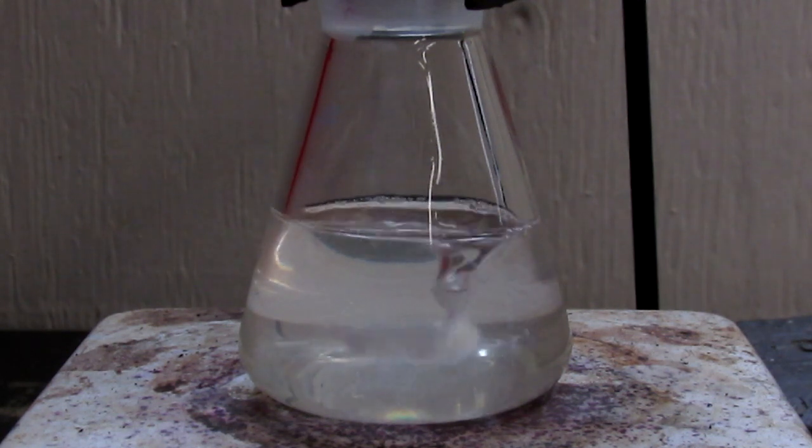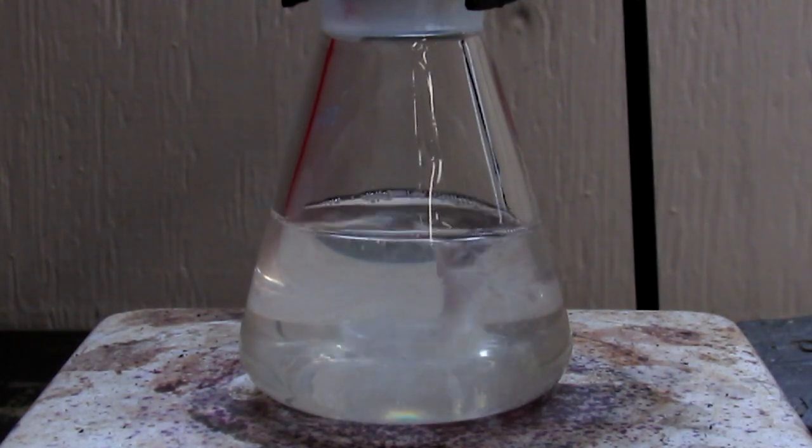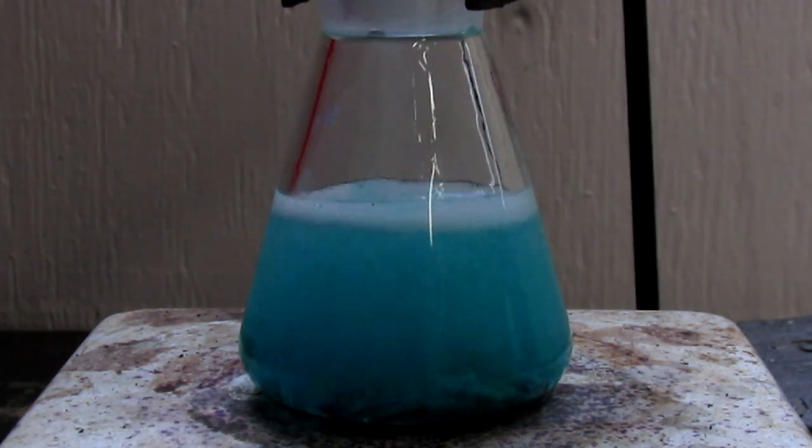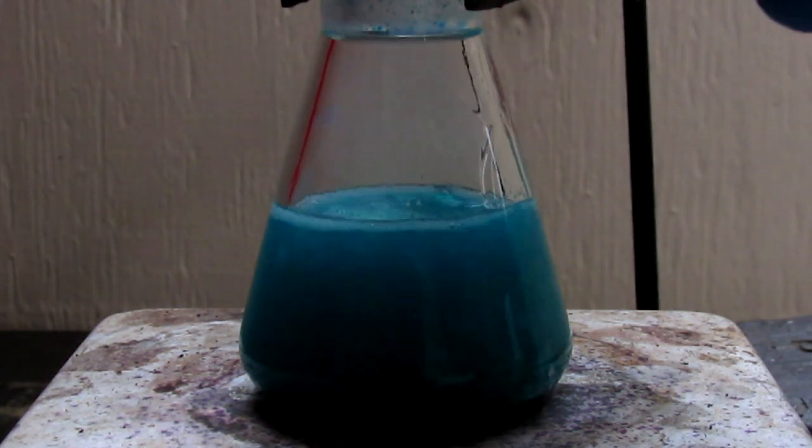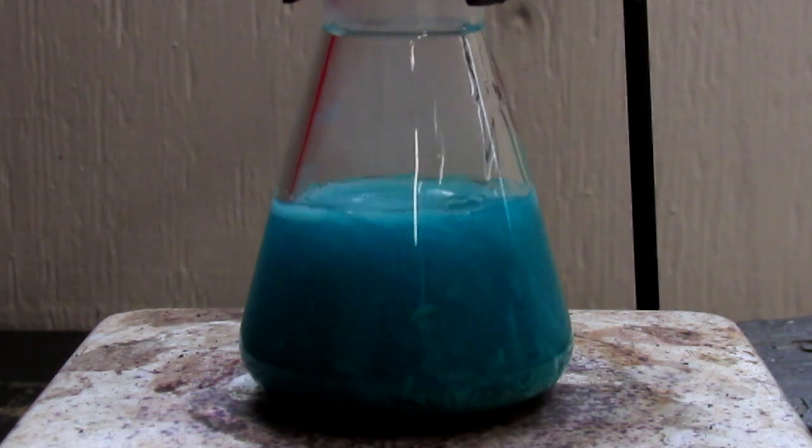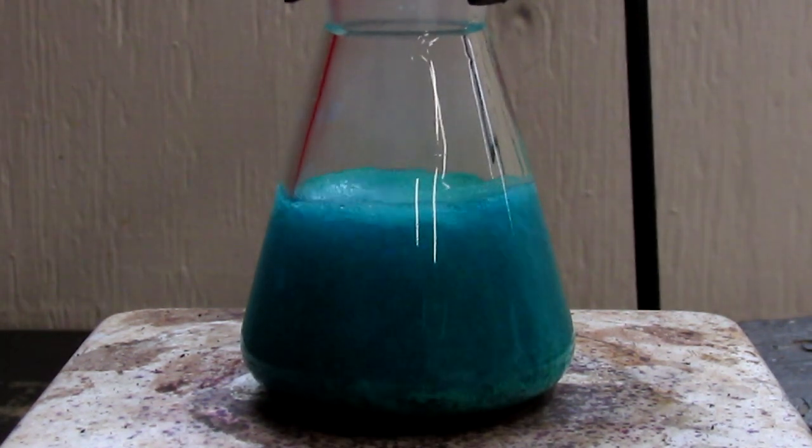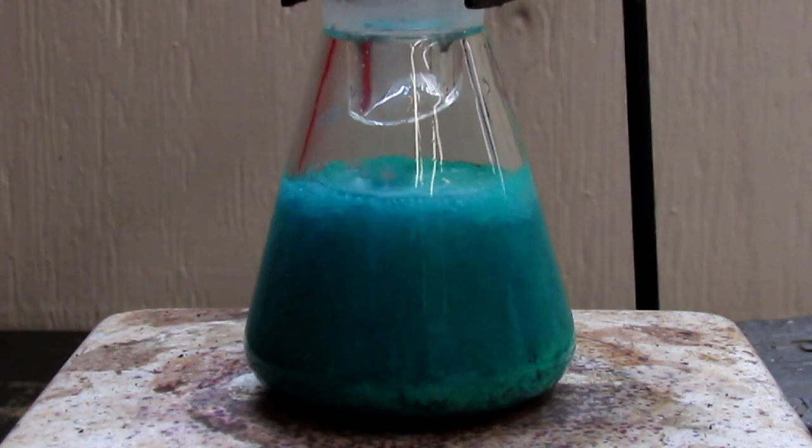The triphenylphosphine is now dissolved, so I'm going to dump in the anhydrous cobalt bromide. You should see a nice color change happen. Very emerald green precipitate. And then I'll throw the condenser back on and let that reflux for 20 minutes.